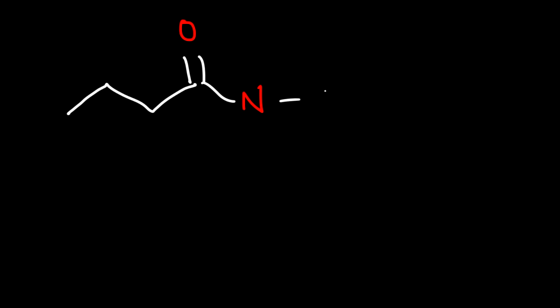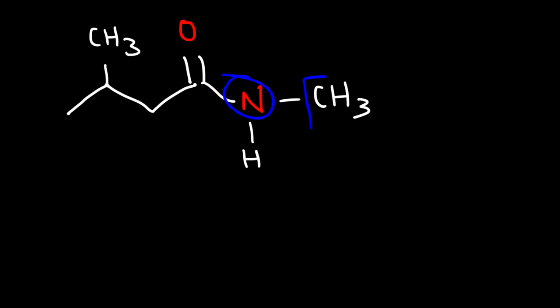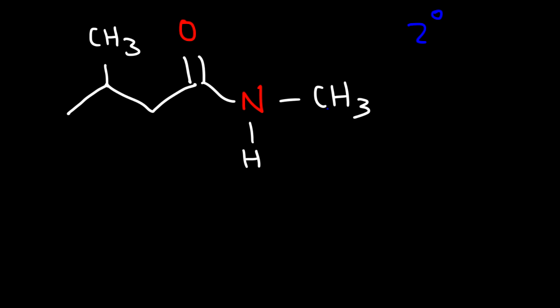In our next example we're going to have a methyl group attached to the nitrogen atom. Feel free to pause the video if you want to try naming this molecule. First, what type of amide do we have — primary, secondary, or tertiary? The nitrogen atom is attached to two carbon atoms, so therefore we have a secondary amide.